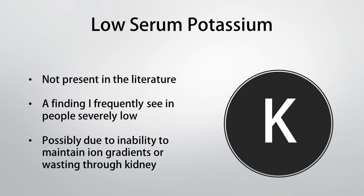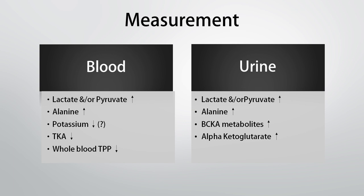Something I see quite frequently is unexplained hypokalemia — low serum potassium — that doesn't respond long-term to potassium supplementation. Potassium simply masks the symptom, but I have seen that replenishing thiamine can actually improve long-term potassium status without relying on a potassium supplement. I'm not entirely sure why — I think it has to do with maintaining ion gradients, and there's also the possibility that the hormonal or neural consequences of a thiamine deficit affect how well the kidney retains or wastes certain minerals.